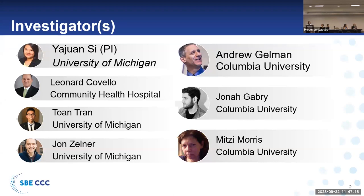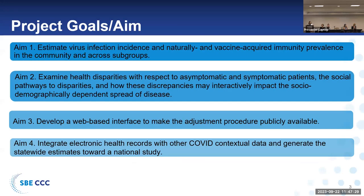This is our team. We have a group of software engineers, statisticians, epidemiologists, and physicians — this is a team effort. To summarize the overarching goal of our year one project, we want to estimate the COVID infection prevalence and immunity across subgroups, and then examine health disparities with respect to asymptomatic and symptomatic patients so that we can learn the social pathways for the disparities.